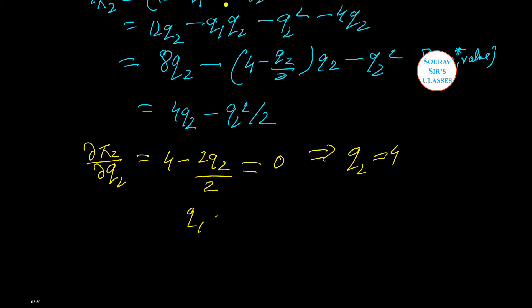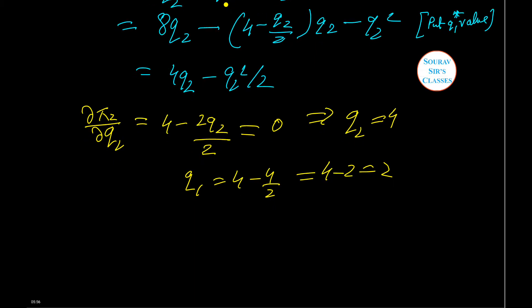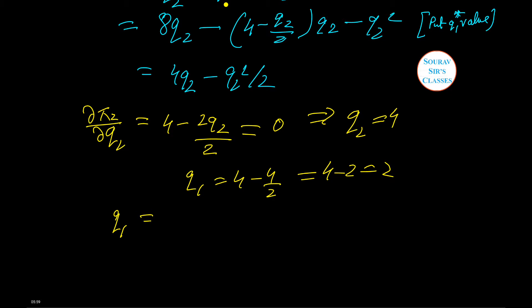Q1 equals 4 minus Q2 by 2, which equals 4 minus 2, or equals 2. So the quantities are Q1 equals 2 and Q2 equals 4. The profits will be pi 1 equals (12 minus Q1 minus Q2) times Q1 minus 4Q1, which equals 4 units. For pi 2, we have 4 times 4 minus 4 squared by 2, which equals 8 units.